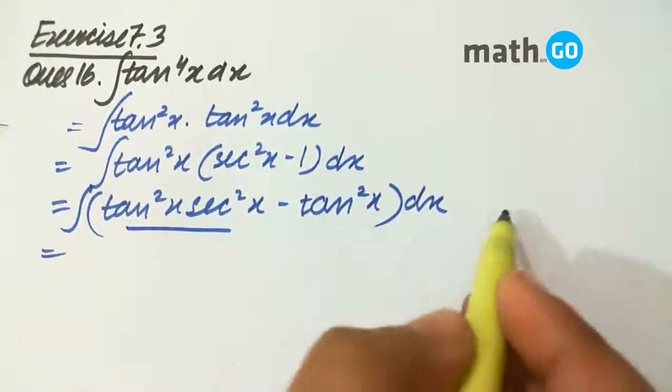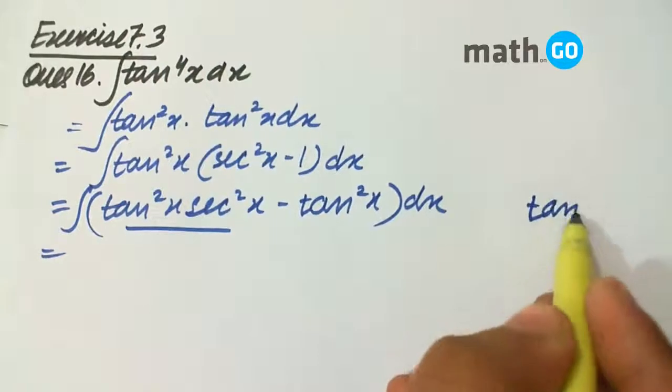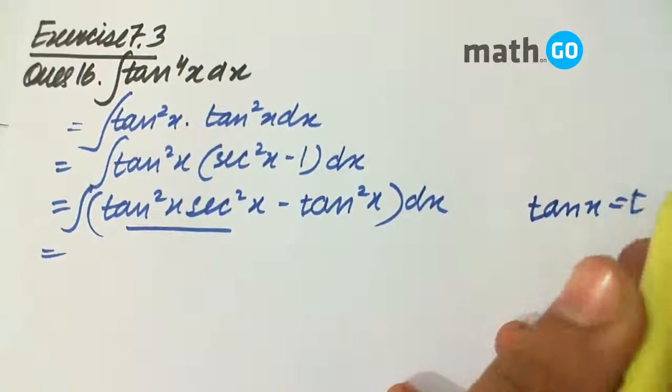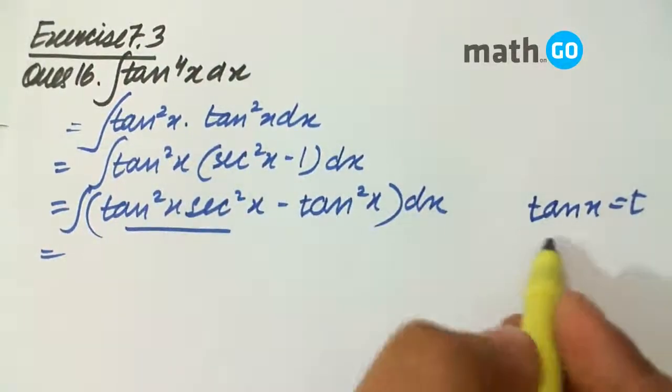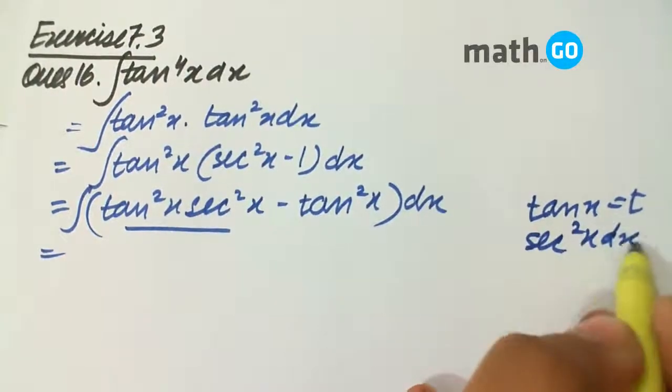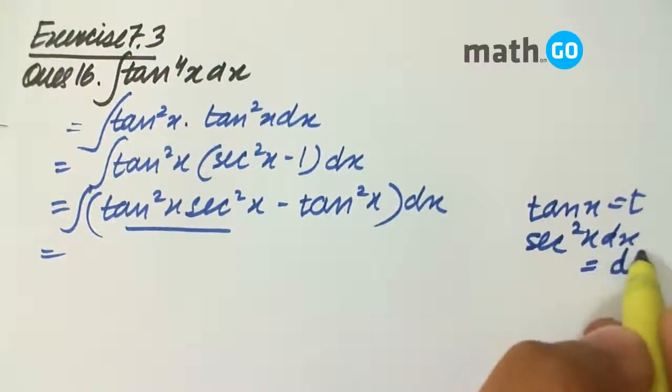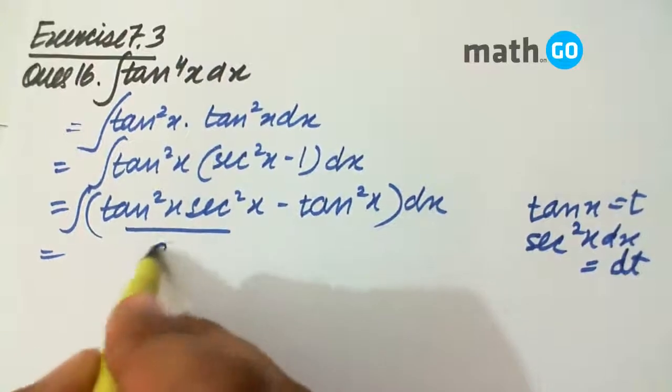This can be done now. How? We put tan x equals to t, so our sec square x dx becomes dt. So we get dt.